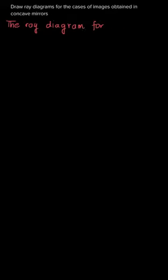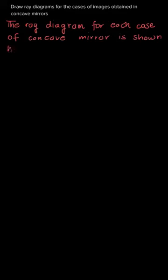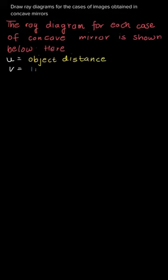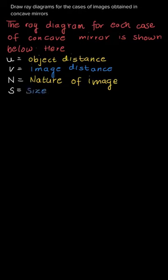Hello everyone. In this question we will draw ray diagrams for the case of different images formed in concave mirrors. We will start from the object kept at infinity and move forward towards the pole. Here u is the object distance, v is the image distance, n is the nature of the image, and s is the size of the image.